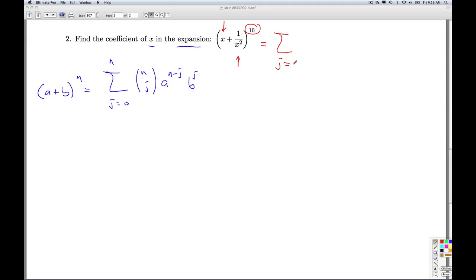So this would be the summation, j goes from 0 to 10, of 10 choose j, x to the 10 minus j, 1 over x squared to the j power. And what we want is the coefficient of x. So we want x to the first power. So the challenge is to figure out what number j is going to give me the result of x to the first power.